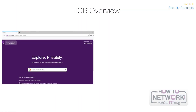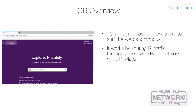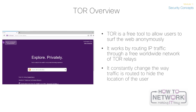Let's talk about Tor. So many people use tools like Tor for privacy. Tor is actually a free tool that allows users to surf the web anonymously. Tor works by routing IP traffic through a free worldwide network of thousands of Tor relays, then it constantly changes the way the traffic is routed to obscure or hide the location of the user from anyone monitoring the network. Tor's name is an acronym of the original software project's name, which is called the Onion Router.